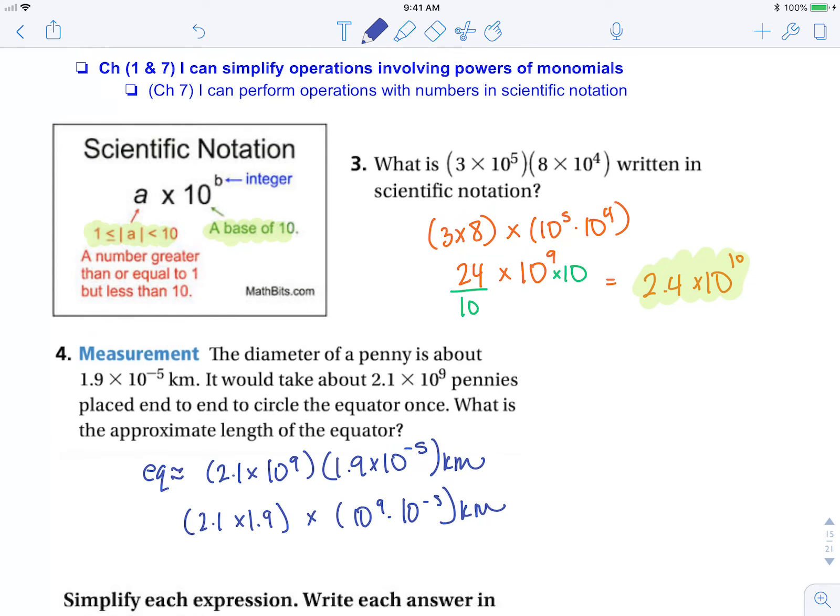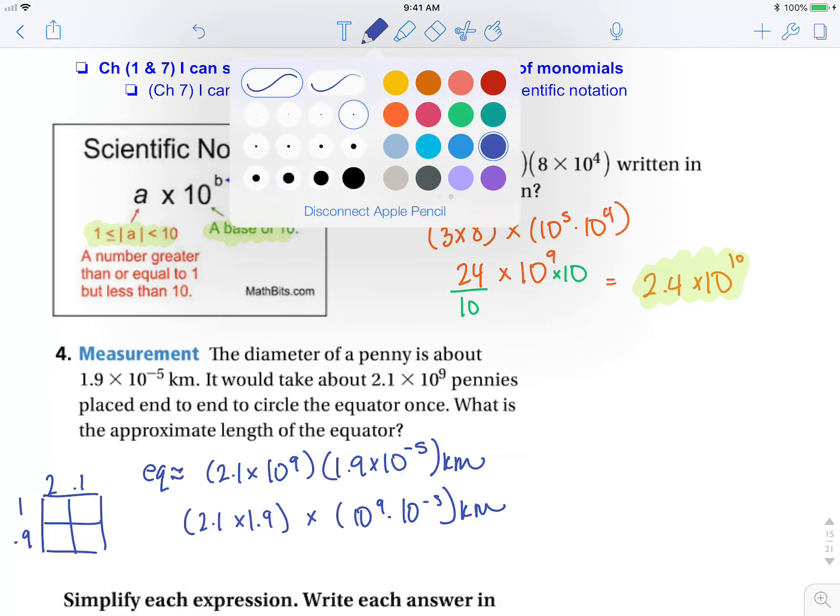Now, if I don't have a calculator and I want to multiply 2.1 times 1.9, I could set that up using the distributive property. That's 2 and 0.1, and 1 and 0.9, and I'm going to multiply.